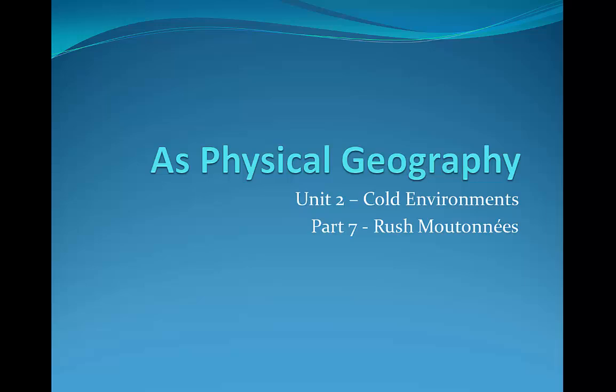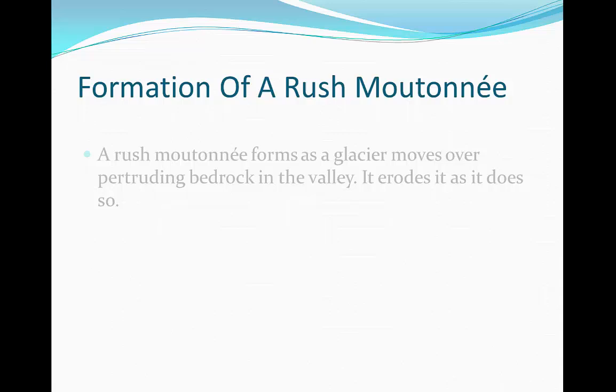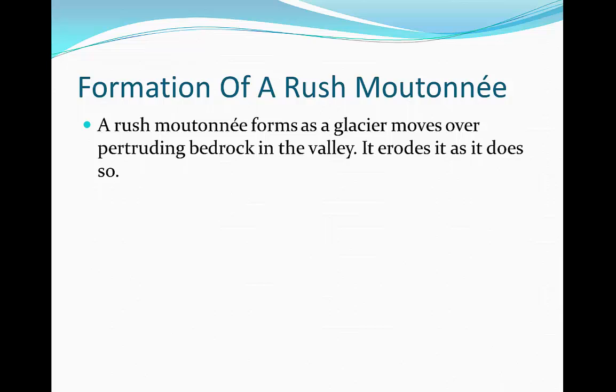Hello students and welcome to the next lesson in our AS level physical geography course. Today we're going to look at the formation of roche moutonnées. A roche moutonnée forms as a glacier moves over protruding bedrock in a valley, and erodes it as it does so.